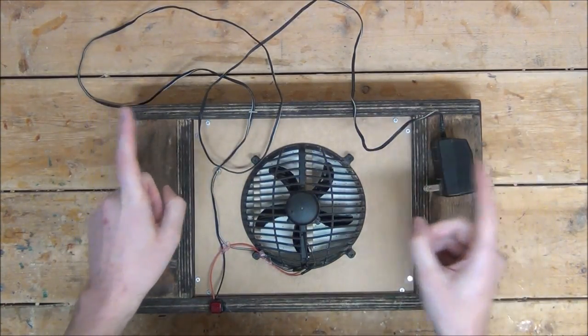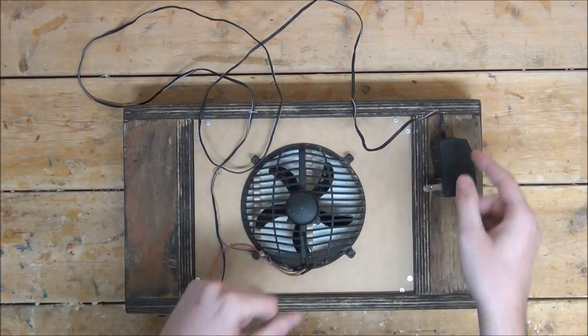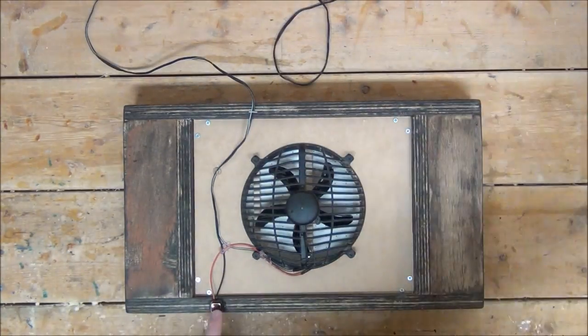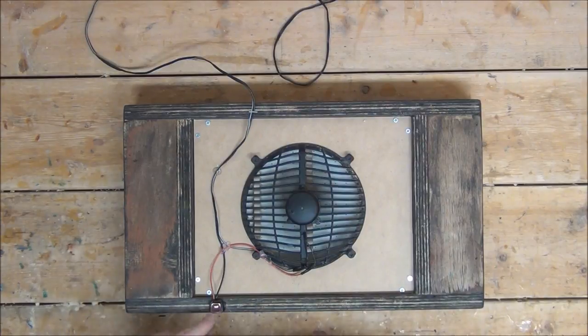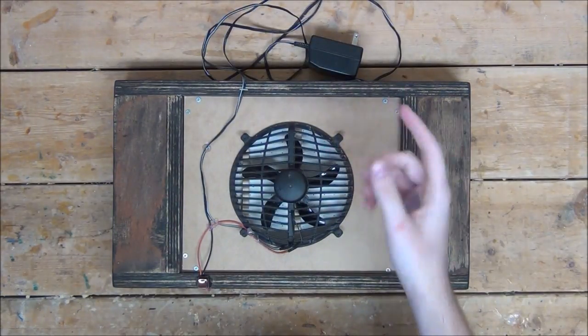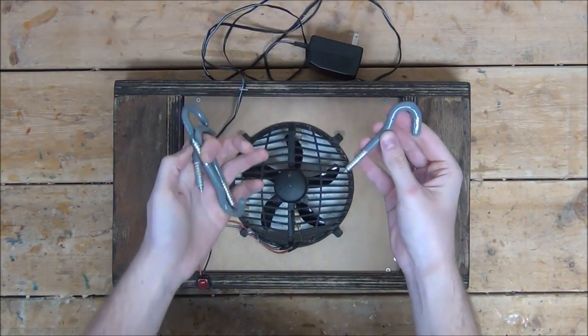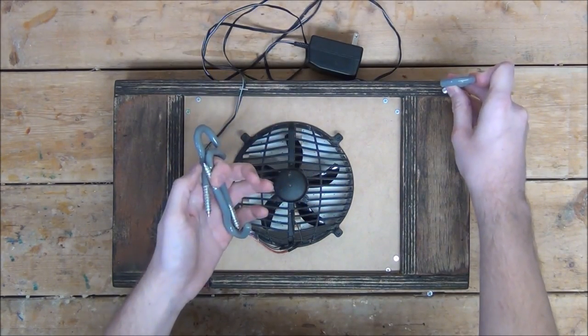There we go. I already took the liberty of hot gluing down the wire, so now we can plug it in and make sure everything works. Wonderful. While we have this upside down, I'm going to go ahead and screw in four of these rubber-coated metal hooks into each corner to serve as legs.